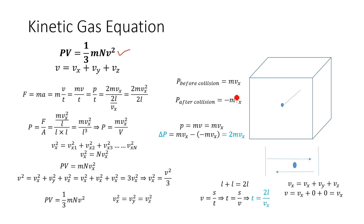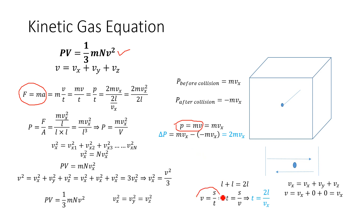Now let's derive the kinetic gas equation. For deriving it, you need to know the equation of momentum: p = mv, Newton's law: F = ma, and the equation of velocity: v = s/t.